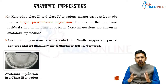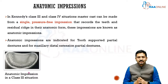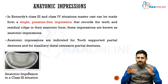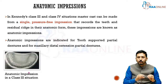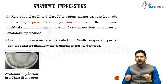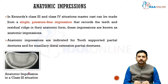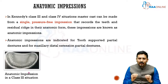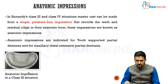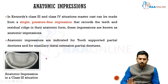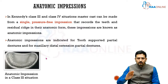Whereas in a situation of Kennedy's class 1 and class 2, the support for the partial denture will be gained from the edentulous ridge as well as the abutment tooth. In this situation, you have to take into consideration special impression techniques in order to achieve an efficient removable partial denture treatment for the patient. Let us first see what an anatomic impression is. In Kennedy's class 3 and class 4 situations, the master cast can be made from a single pressure-free impression which records the teeth and the residual ridges in their anatomic form. These impressions are known as anatomic impressions, and they are indicated for tooth-supported partial dentures and for maxillary distal extension partial dentures.